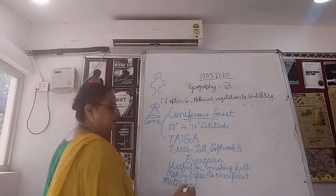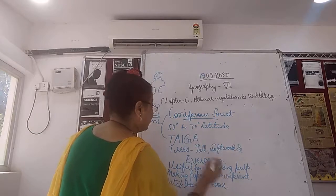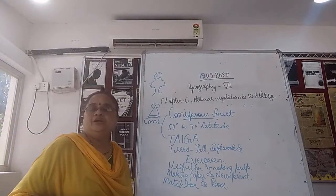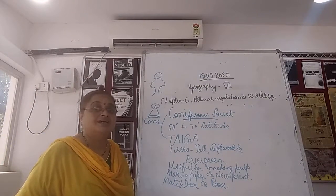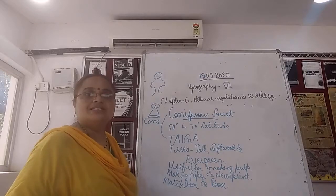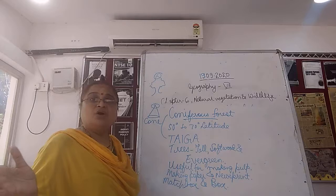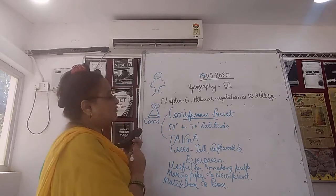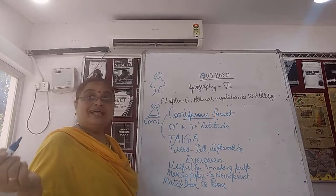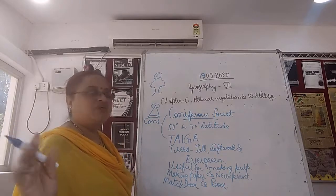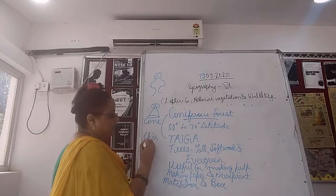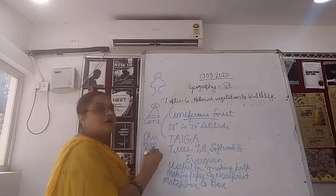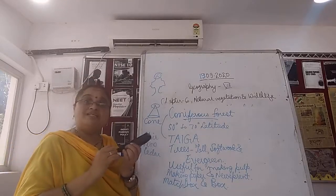Matchboxes and big cartons — the large cardboard boxes you have seen — those are also made from coniferous forest trees. So matchboxes, packing boxes, everything is made from this softwood. The trees found in this kind of vegetation include cheel, pine, and cedar — very rare trees not found in plain areas.